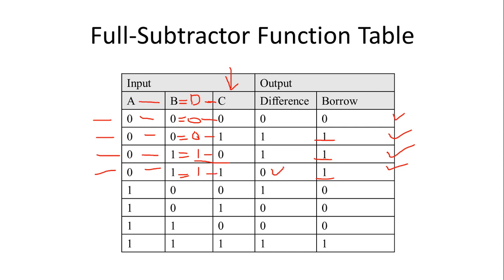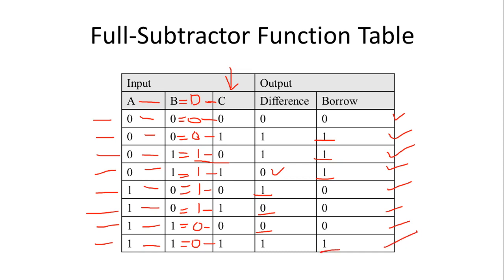Continuing: one minus zero equals one and one minus zero equals one, no borrow taken. One minus one equals zero, no borrow needed; one minus one equals zero and zero minus zero equals zero, difference zero, no borrow. One minus one equals zero and zero minus one requires a borrow of magnitude two; two minus one equals one, so difference is one and borrow is one. This is how we populate the function table for our full subtractor.